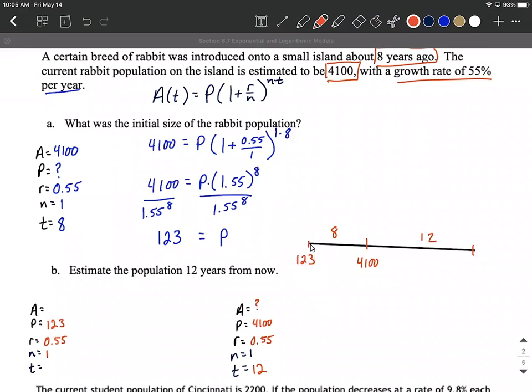But our time frame has changed. If we start here at 123 rabbits getting dropped off, we have to go eight years into the future to end up with today. Then we want to look 12 more years into the future to figure out 20 years from the introduction of these rabbits, how many are going to be left.